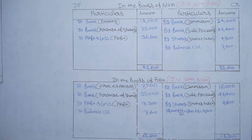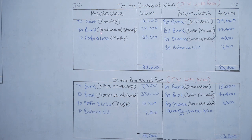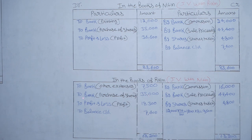Rikin spent Rs 7,500 for other expenses: To Bank Account — Rs 7,500. Next, To Bank — Purchase of Shares: Rs 35,000. Out of total 1 lakh shares, 93,000 were taken up by the public. The remaining 7,000 shares are taken up by Nitin and Rikin equally, at paid-up value of Rs 10 per share. 7,000 × 10 = Rs 70,000, and half of Rs 70,000 = Rs 35,000 each for Nitin and Rikin.